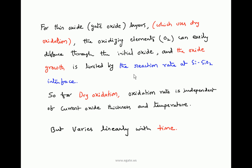The oxidizing elements — O₂, oxygen atoms — can easily diffuse through the initial oxide, so the initial oxide does not prevent the oxidizing elements from reaching the silicon–silicon dioxide interface. Therefore, for dry oxidation, the oxidation rate is independent of current oxide thickness and temperature. However, the oxidation growth rate does vary linearly with time — how long the oxidation is performed determines the growth.